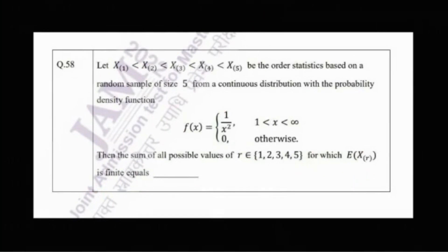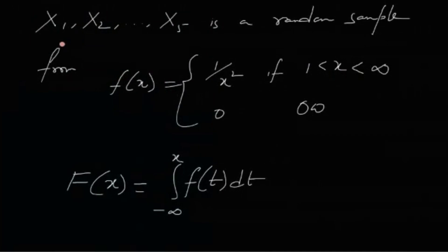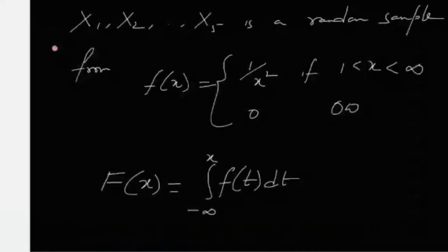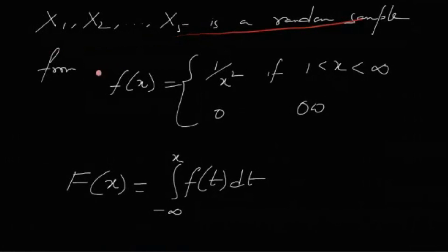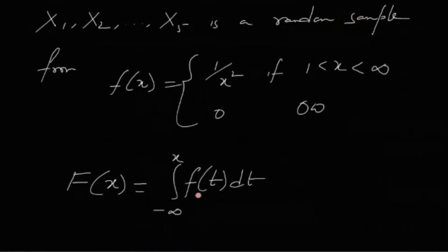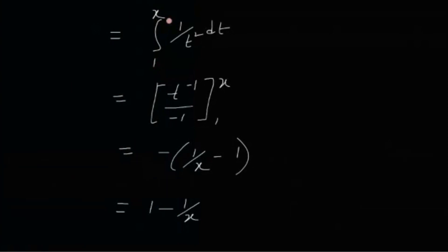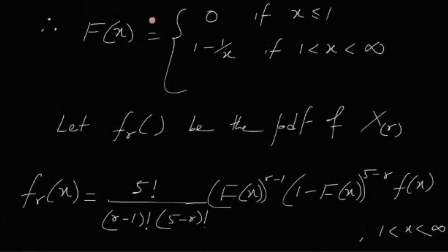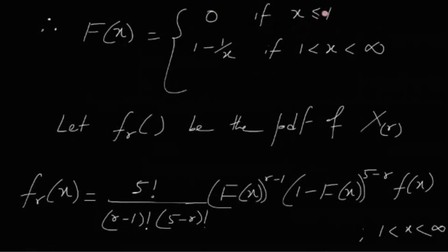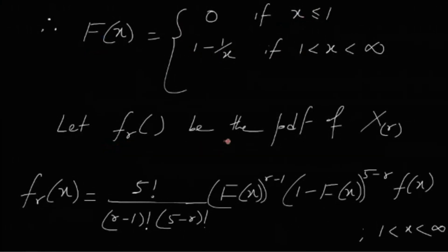So let X₁ through X₅ be a random sample from this distribution. The CDF F(x) is the integral from minus infinity to x of f(t) dt, which is the integral from 1 to x of 1/t² dt, giving F(x) = 1 − 1/x. So F(x) = 0 if x ≤ 1, and 1 − 1/x if x > 1.